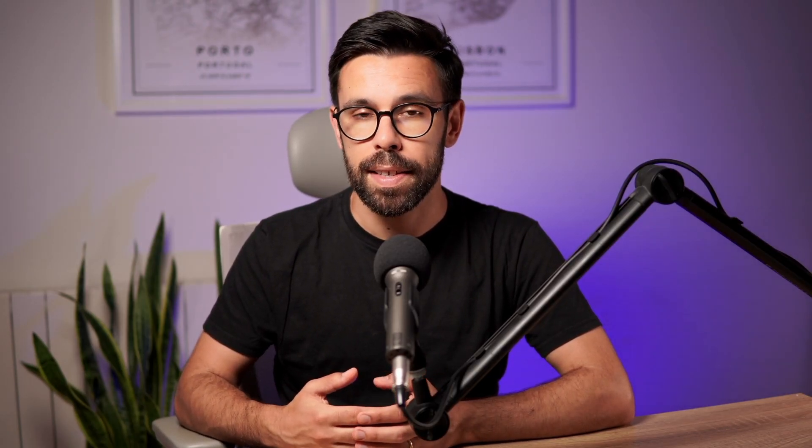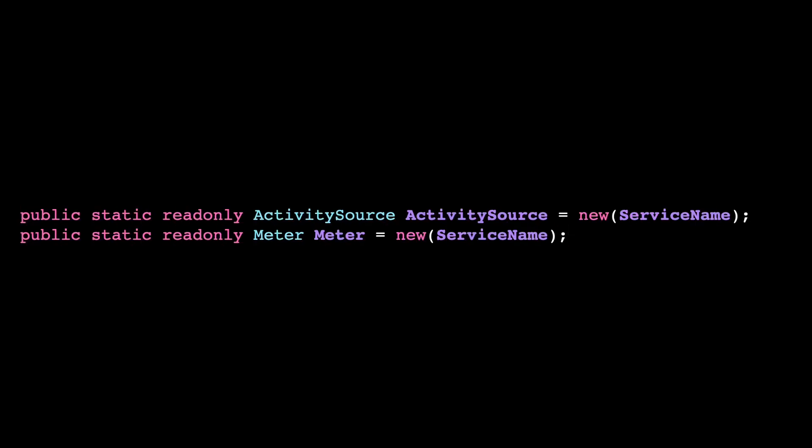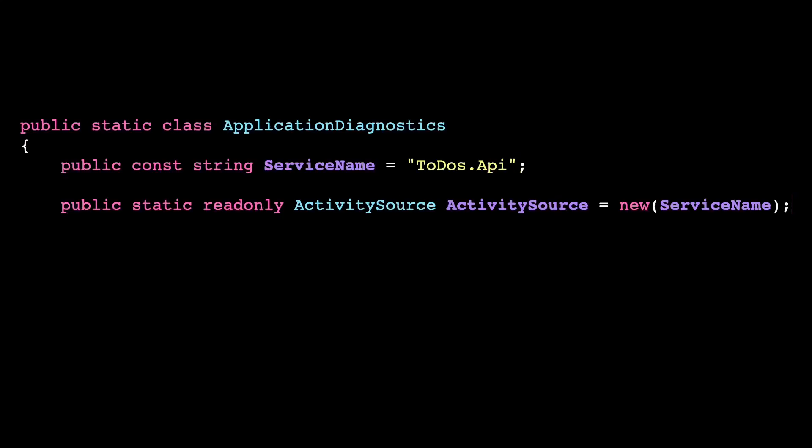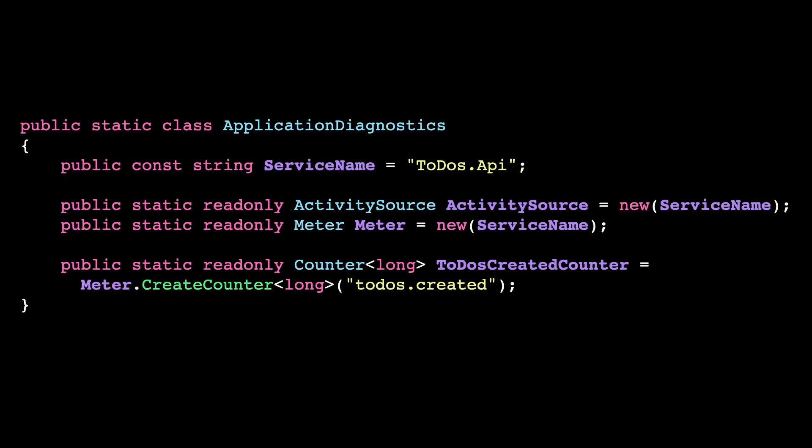Tip number two: use a static class for diagnostics. In order to create your traces and your metrics, you will need access to the ActivitySource or to the Meter. Those are static properties that you will have in your source code, and a common approach is to put those behind an interface for the sake of testing or to isolate that dependency — but in fact, you don't need that. Keep them in a static class, and you can reference it everywhere.